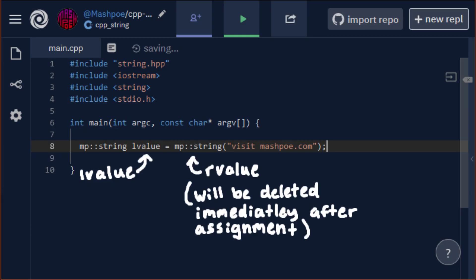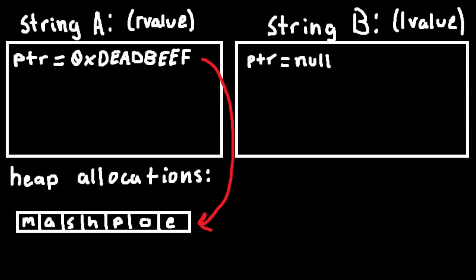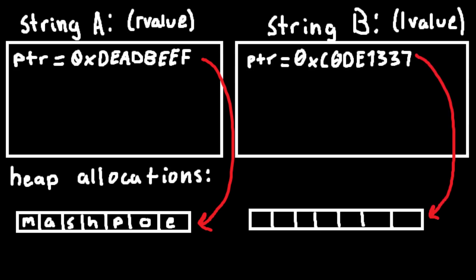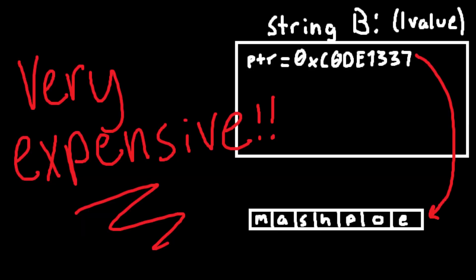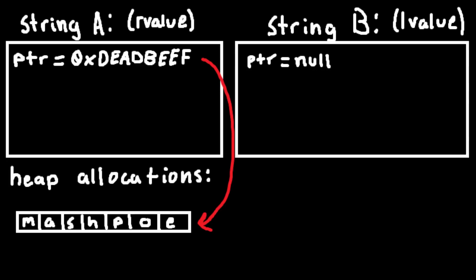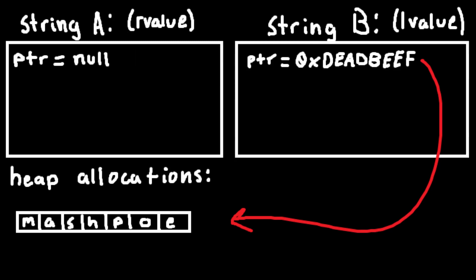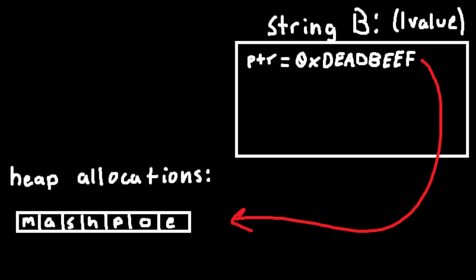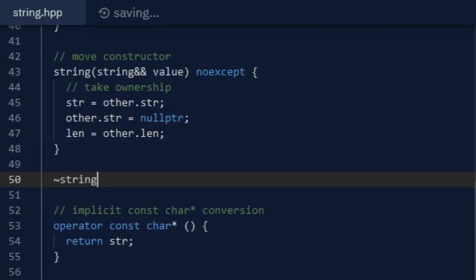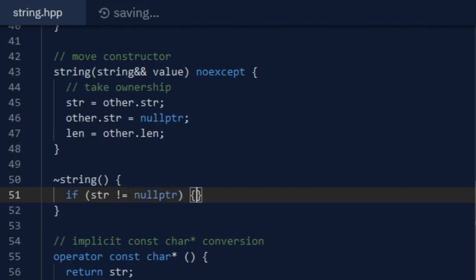The move constructor is only used when the original string is going to be deleted immediately. This is an important optimization because dynamic memory allocation and copying are very expensive, and when the original string object is just going to be deleted, we can transfer the ownership of the string data from the original string object to the new one, and set the old string object's data pointer to null. This is important because a string object's destructor will delete its data if the pointer isn't set to null.